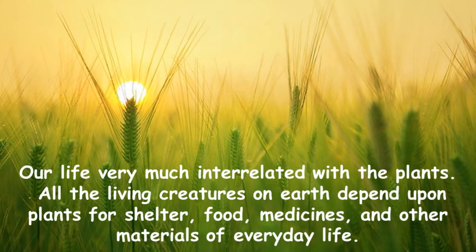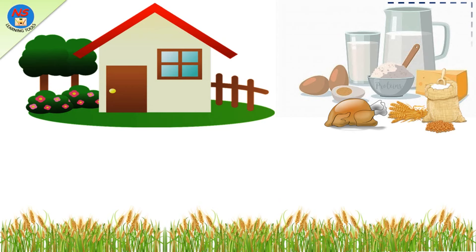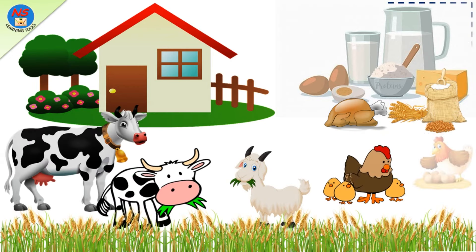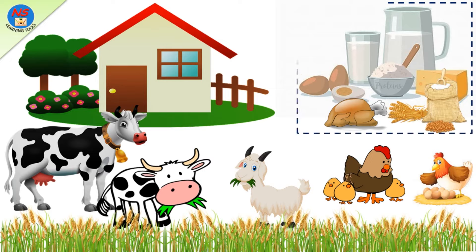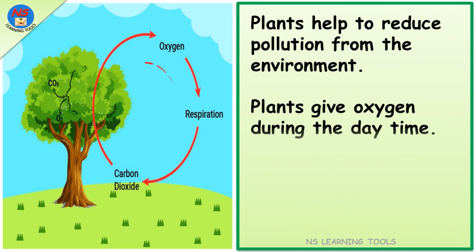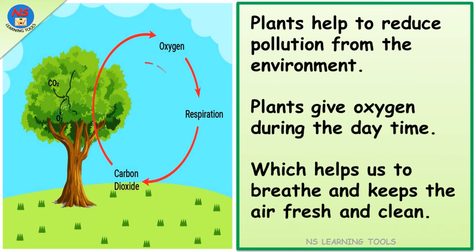Our life is very much interrelated with plants. All living creatures on earth depend upon plants for shelter, food, medicines, and other materials of everyday life. We feed on plant-based food or animal-based products, and these animals also survive by feeding upon plants. Plants help to reduce pollution from the environment. Plants give oxygen during the daytime, which helps us to breathe and keeps the air fresh and clean. They take in carbon dioxide and release oxygen during the process of photosynthesis.